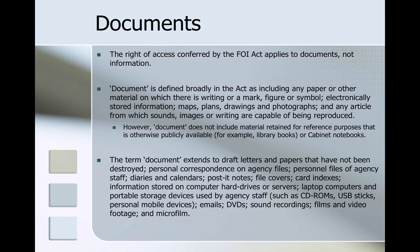The right of access conferred by the Freedom of Information Act applies to documents, not information as such. A document is defined broadly in the Act as including any paper or other material on which there is writing, a mark, figure or symbol, electronically stored information, maps, plans, drawings and photographs, and any article from which sounds, images or writing are capable of being reproduced. However, document does not include material retained for reference purposes that is otherwise publicly available, such as library books or cabinet notebooks.